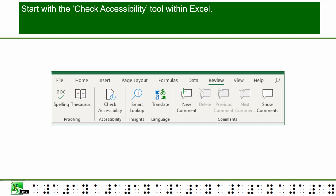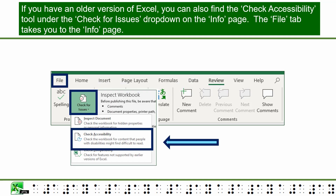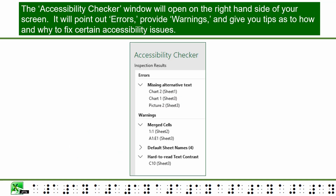Start with the Check Accessibility tool within Excel. If you have Microsoft Office 365, you should be able to find the Check Accessibility tool under the Review tab. If you have an older version of Excel, you can also find it under the Check for Issues dropdown on the Info page. The File tab takes you to the Info page.